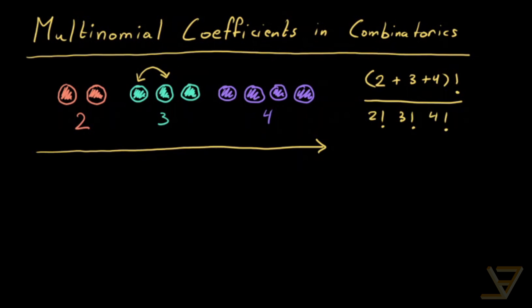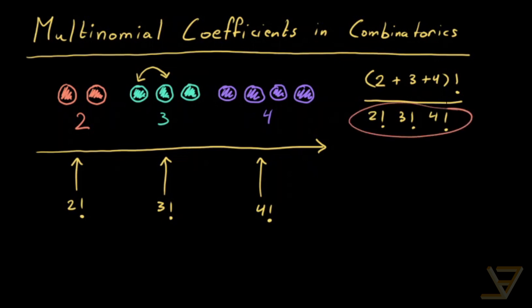This should intuitively make sense because the number of ways of permuting the orange ones among themselves is 2 factorial, the number of ways of permuting the teal balls among themselves is 3 factorial, and the number of ways of permuting the purple balls among themselves is 4 factorial. So there's a symmetry, and we're dividing out by that symmetry to get distinct permutations.